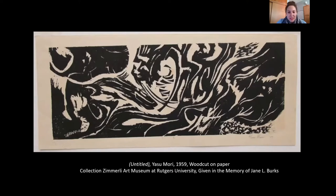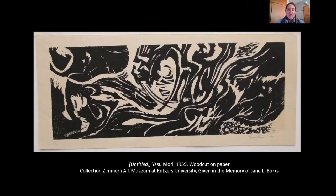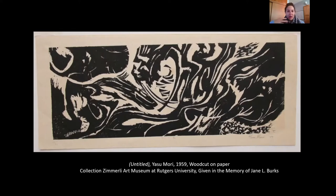Our first picture is an image of a woodcut — a print on paper. Someone carves into a piece of wood, puts ink on top, and it settles into the different crevices. Then you put a piece of paper on top, and when you take the paper off, you're left with the image from what you carved. You can see there's a lot of black ink, and also a good amount of white space where the ink did not take.